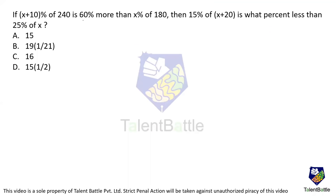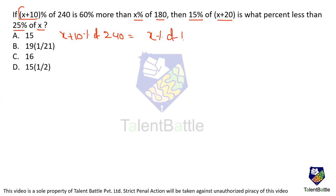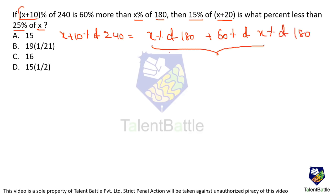X plus 10 percentage of 240 is 60% more than X percentage of 180. Then 15% of X plus 20 is what percentage less than 25% of X? Let's calculate the value of X first. X plus 10 percentage of 240 equals X percentage of 180 plus 60% of that, which is 160% of X percentage of 180.